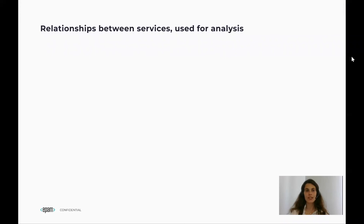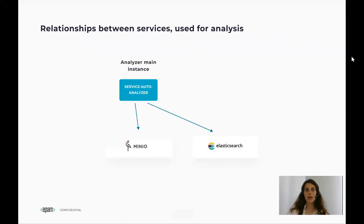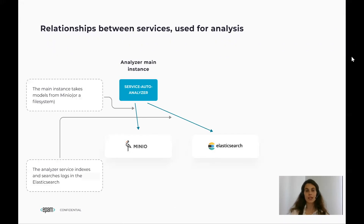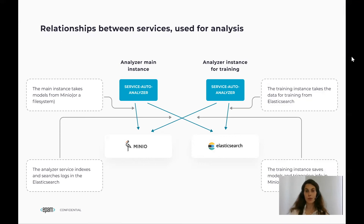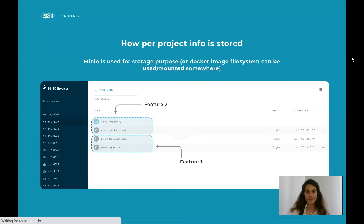Now I'll explain what's changed in the relationships between services used for analysis. We have our main instance of the analyzer, which indexes and searches logs in Elasticsearch and takes models from Minio or a file system. We've added one more instance for training, which takes data for training from Elasticsearch and saves models and triggering info in Minio or the file system. We decided to separate the main instance logic from training because we don't want it disturbed by heavy training operations, but these two instances still use the same image, Service Autoanalyzer. The project information is stored either in Minio or a file system, with two files connected to the first feature, and the model for the second feature stored in a folder along with defect type triggering info.